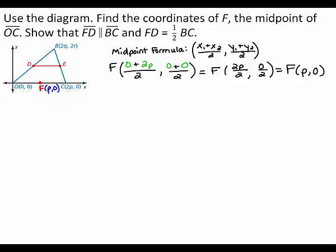Next, you need to find the coordinates of D. In the diagram, segment DE is a mid-segment, so point D is the midpoint of segment OB. Therefore, you can find the coordinates of D using the midpoint formula. Let x1 equal 0, y1 equal 0, x2 equal 2q, and y2 equal 2r. You can substitute these values into the midpoint formula.